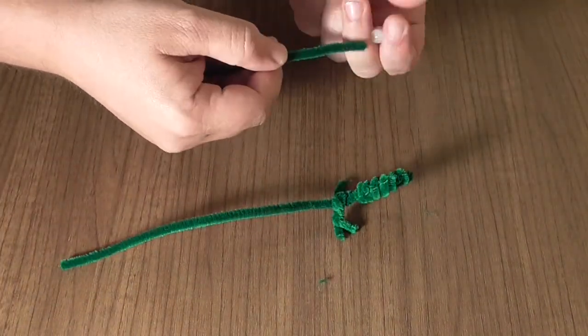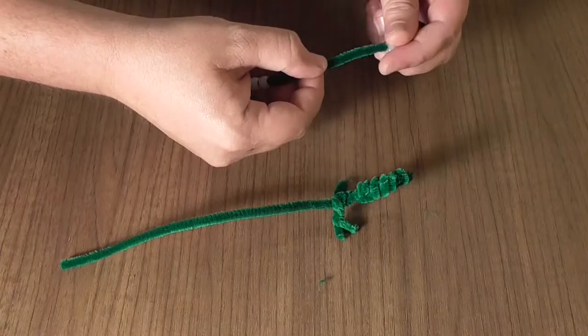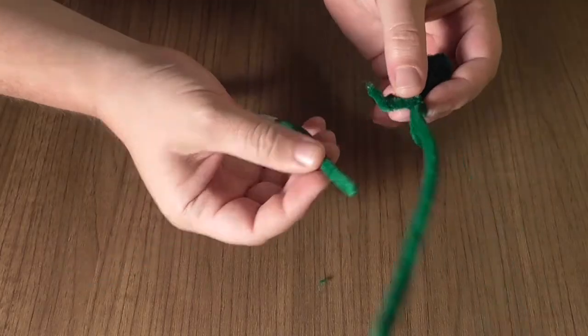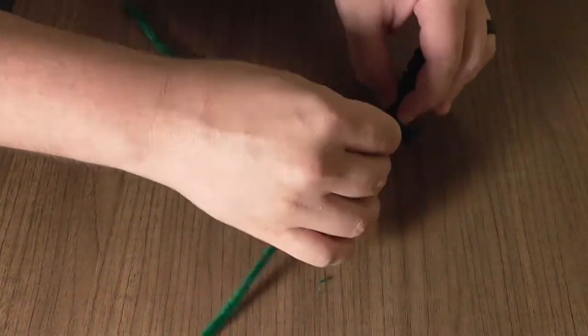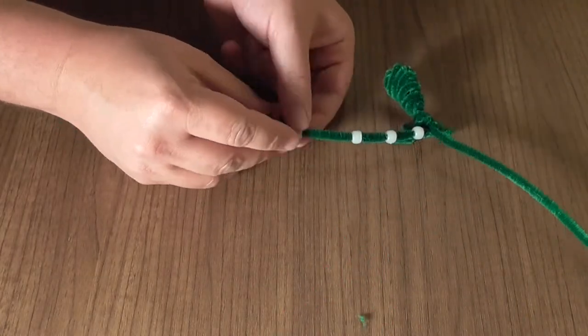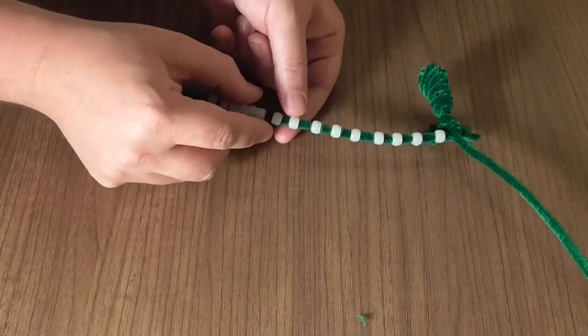Slide all of your beads onto another pipe cleaner. Connect one end of that pipe cleaner to the neck of your chameleon. Then spread out your beads evenly, leaving some space at the other end of the pipe cleaner.